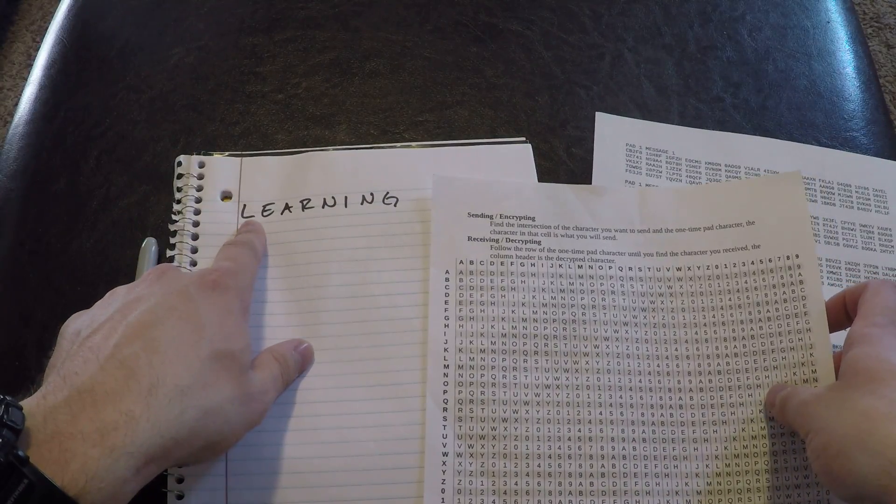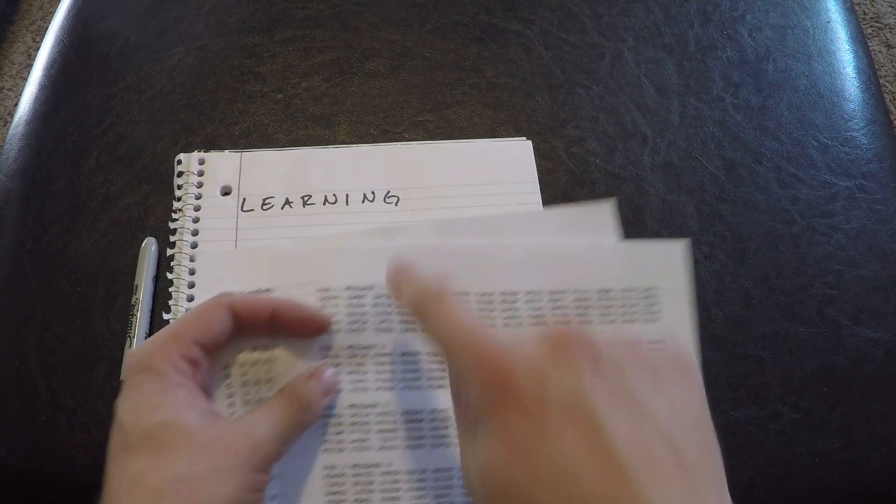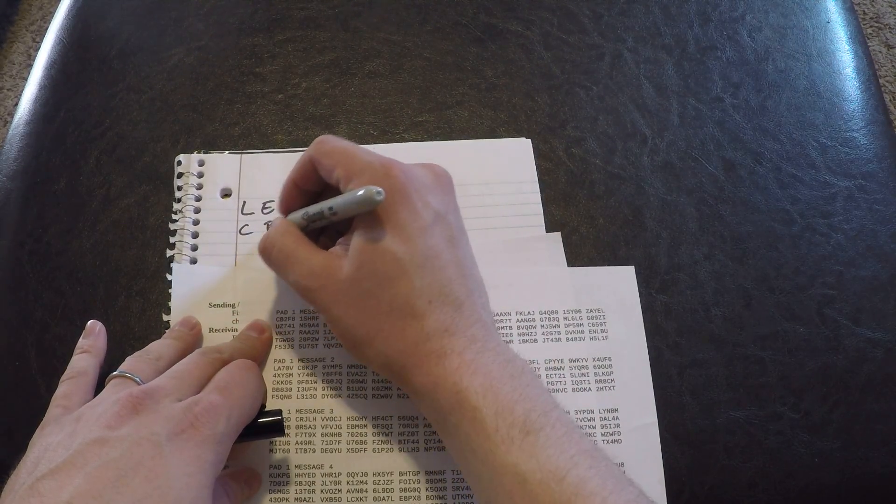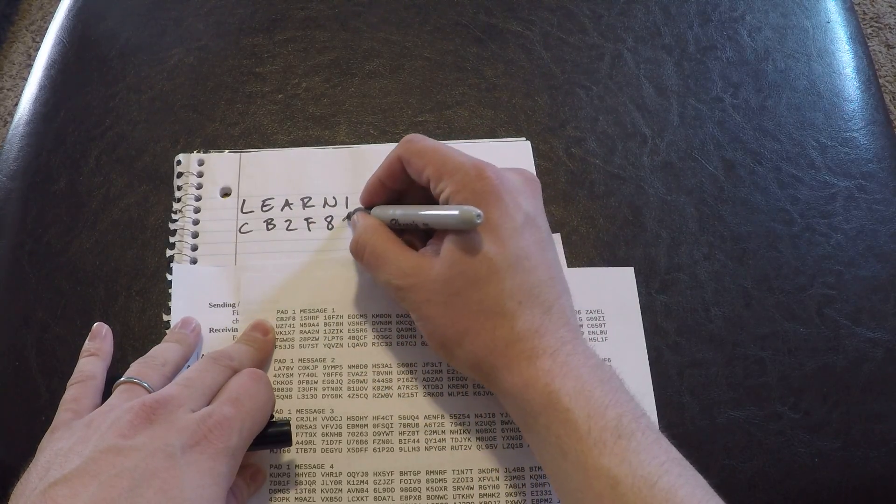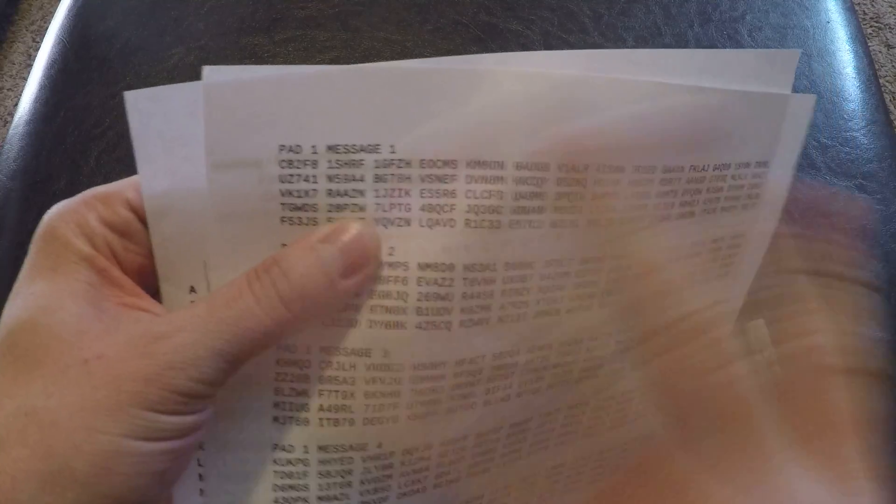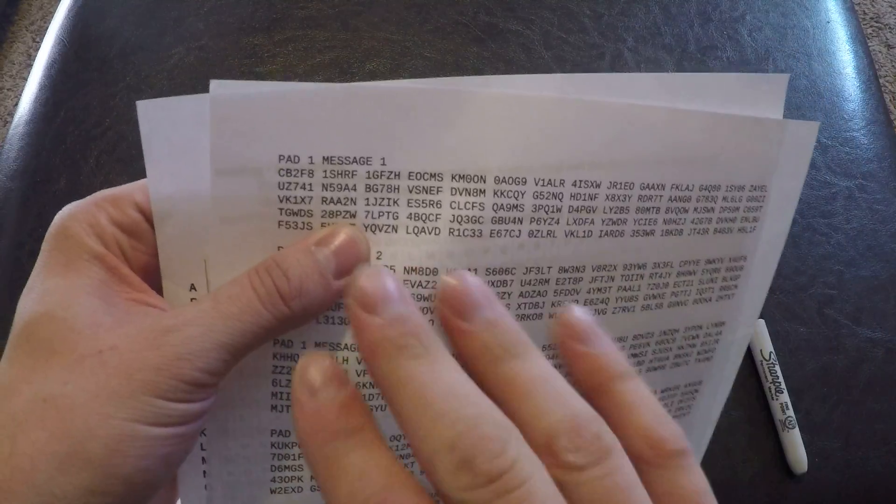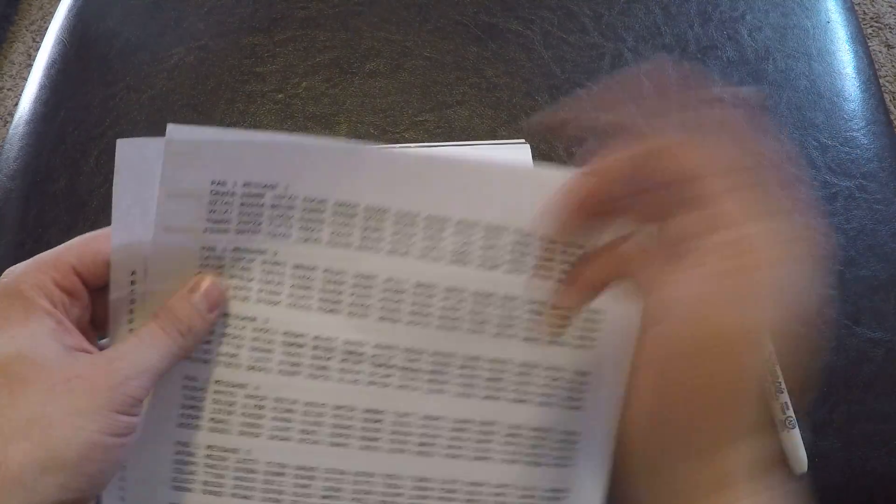So we want to send L, but we want to have it encrypted. So we're going to add it to the character on this one time pad. So underneath each of these letters, I'm going to write down the character from the one time pad. So we're going to do CB2F81SH. And in here, there's spaces between each of these columns. That's not a character that you're going to send or anything like that. It's just there to make it a little bit easier to read. So if this was our only message we're going to send, we cut this off, burn it. Because we've used it as much as we need to.